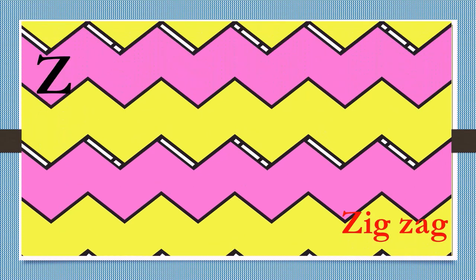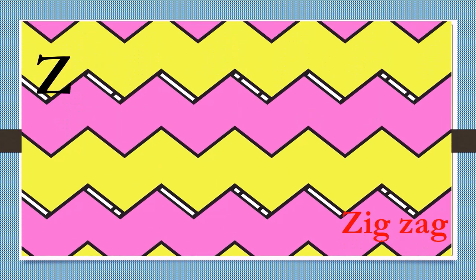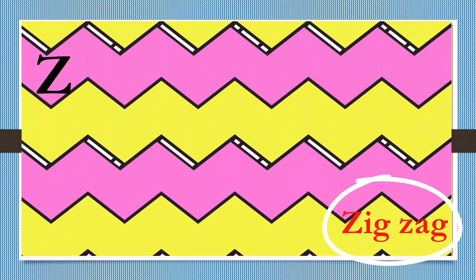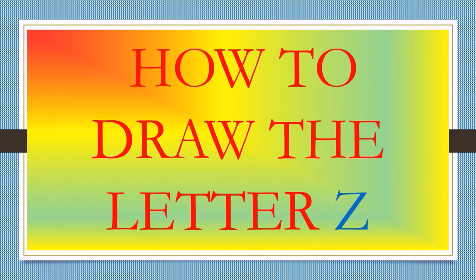Z for zigzag. Z-I-Z, Z-A-Z, zigzag. The word zigzag starts with Z. How to draw the letter Z?